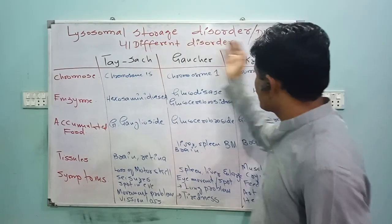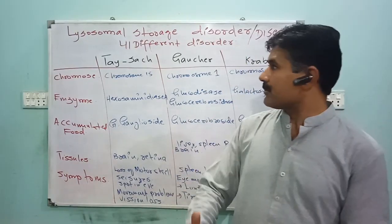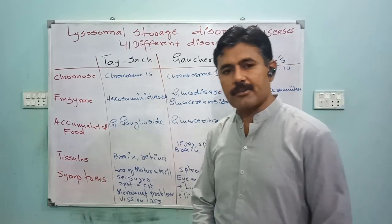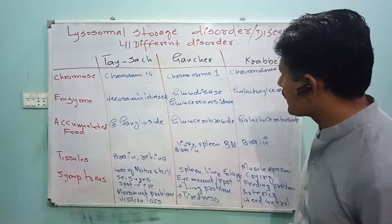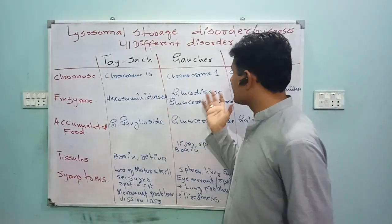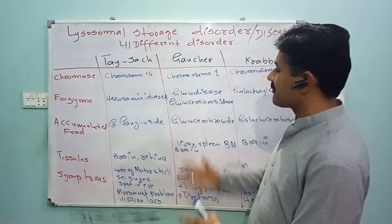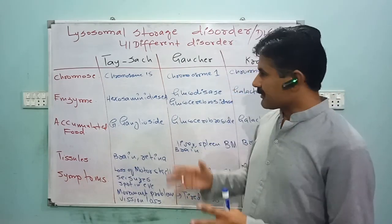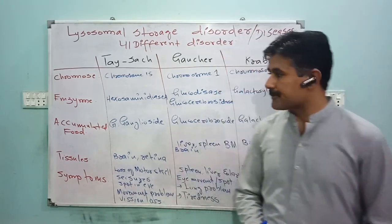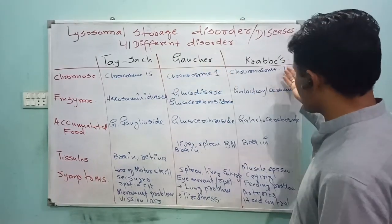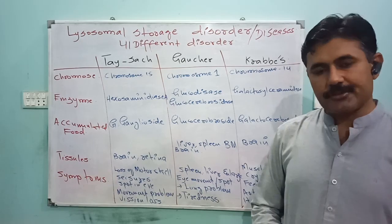Lysosomal storage disorders are explained in a chart to make it easy to understand. There are around 20 to 40 different types of lysosomal storage disorders. We will focus on the three most important ones discussed in textbooks: Tay-Sachs disease, Gaucher's disease, and Krabbe disease.